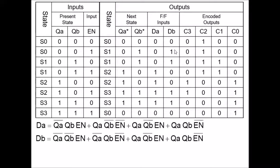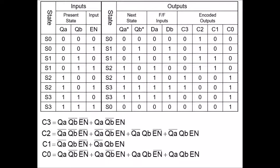I did the exact same thing for DB — every place I see a one, I write the term in terms of QA, QB, and enable. For example, the first term is: (not QA) AND (not QB) AND enable. For the encoded outputs, the same approach applies. For C3, every time I see a one I write the equation in terms of inputs: for instance, QA AND (not QB) AND (not enable). These are the four equations for the outputs.